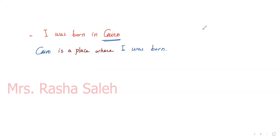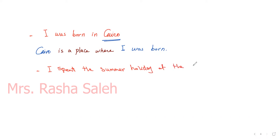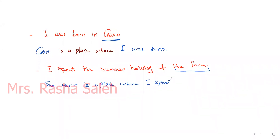Another example: 'I spent the summer holiday at the farm.' If I want to use 'where', I take the place 'the farm' and the result is: 'The farm is a place where I spent the summer holiday.'